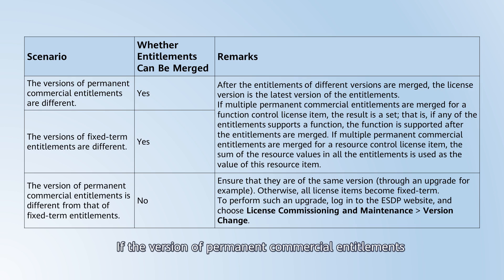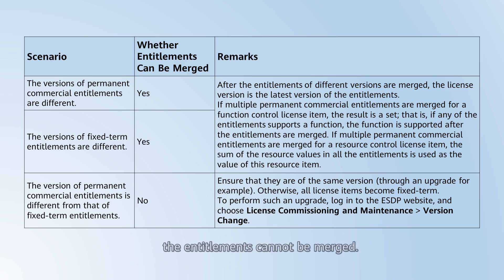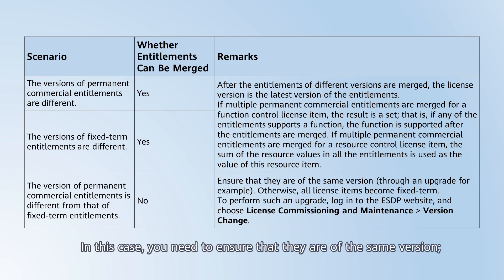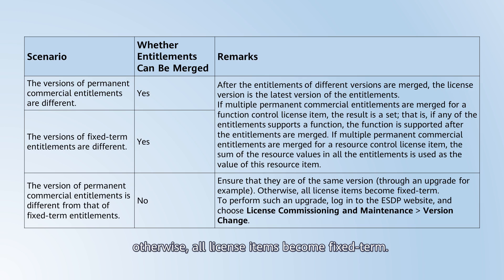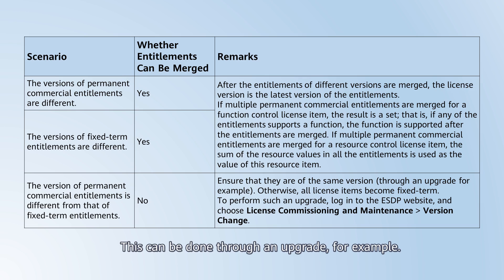If the version of permanent commercial entitlements is different from that of fixed-term entitlements, the entitlements cannot be merged. In this case, you need to ensure that they are of the same version. Otherwise, all license items become fixed-term. This can be done through an upgrade, for example.